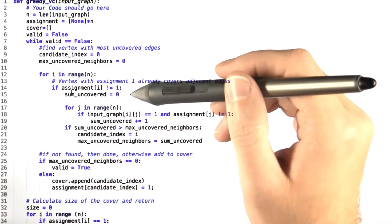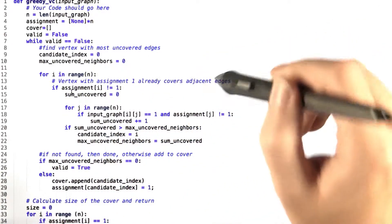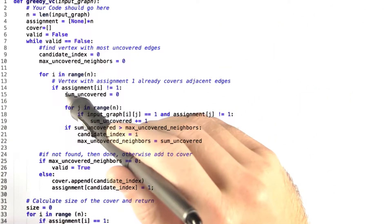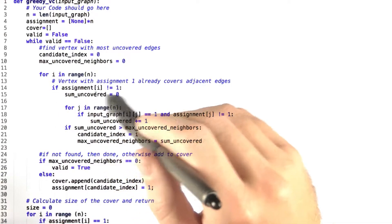Now for every vertex in the graph, we check if it has already been assigned. Because if so, then it already covers all adjacent edges. If not, then we first set the sum of uncovered edges to be 0.